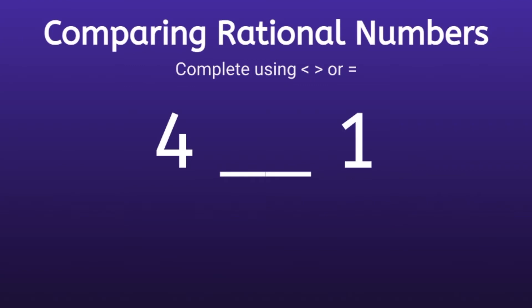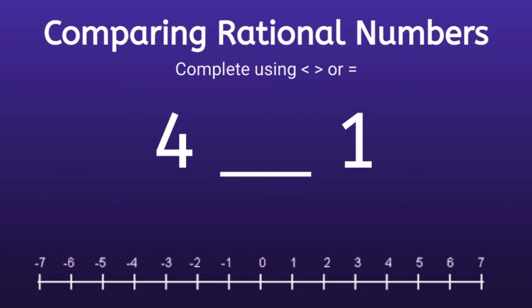In this video we're going to look at comparing rational numbers, which means we want to find out which number has less value than the other one. In order to do this we can use a number line. On a number line, the numbers to the left have less value and the numbers to the right have greater value. So what we can do is graph both of our numbers to see which one has less value.